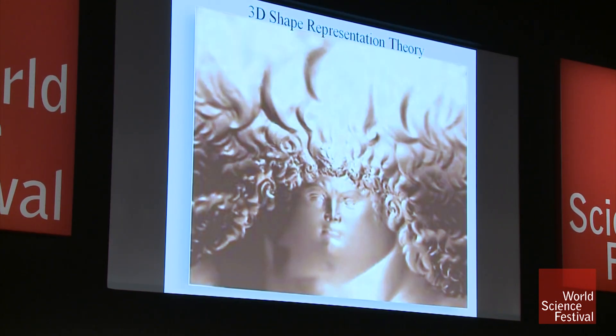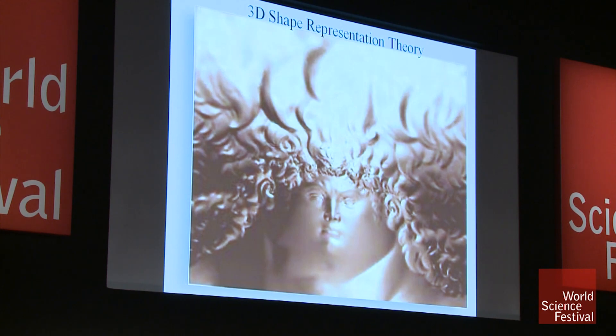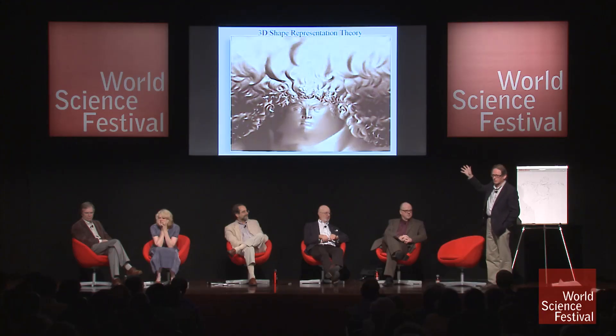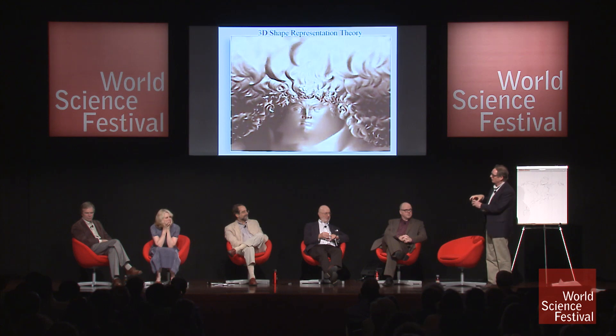The theory here is that you can unwrap the 3D shape into a 2D surface. This is achieved by a mathematical process called Riemannian uniformization. This work was done by a mathematician called David Gu, which shows in principle how you can go from 3D to 2D.